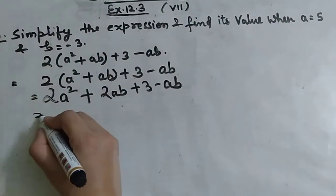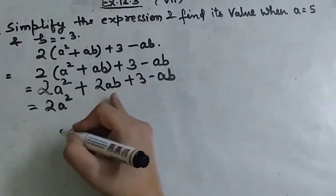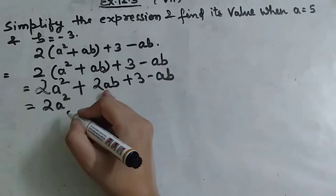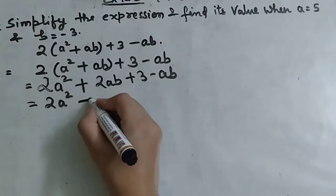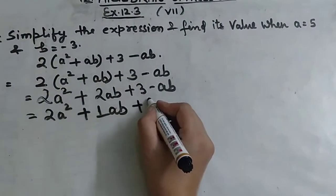Here a² is only a single term, which is 2a². We have 2ab and minus 1ab, so 2ab minus 1ab equals 1ab, then plus 3.